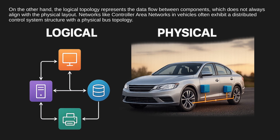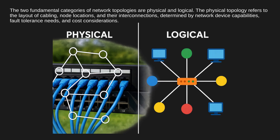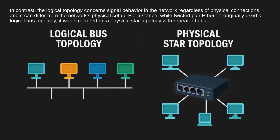Networks like controller area networks in vehicles often exhibit a distributed control system structure with a physical bus topology. The two fundamental categories of network topologies are physical and logical. The physical topology refers to the layout of cabling, node locations, and their interconnections, determined by network device capabilities, fault tolerance needs, and cost considerations. In contrast, the logical topology concerns signal behavior in the network, regardless of physical connections, and it can differ from the network's physical setup.